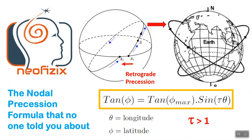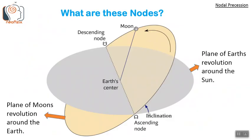Eventually the orientation of the plane of revolution flips from one configuration to the other over half the nodal precession time period. The bluish-gray region is the plane of earth's revolution around the sun; the orangish-tinge region is the plane of moon's revolution around the earth. The plane of moon's revolution has an inclination with respect to the plane of earth's revolution. The points where the moon's orbit intersects the plane of earth's revolution are called the nodes — this is the ascending node where the moon is moving up, and this is the descending node where the moon is going down.